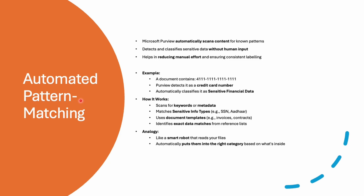The second approach is automated pattern matching. Microsoft Purview automatically scans content for certain patterns — if it finds credit card numbers or passport numbers, it automatically classifies them. We already talked about sensitive info types, and classification is based on those. For example, a document containing a string like '4111 4x1 4x1 4x1' looks like a credit card format, so Microsoft Purview will detect and automatically classify it as sensitive financial data.